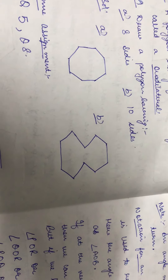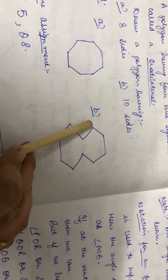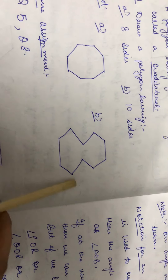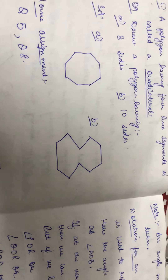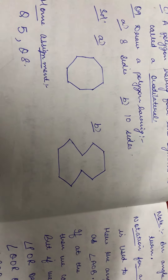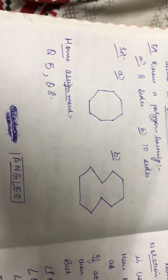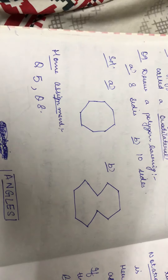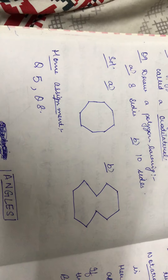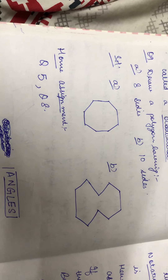Next, a polygon with ten sides — one, two, three, four, five, six, seven, eight, nine, ten. So this is a polygon with ten sides. Question number 5 and question number 8 of exercise 11.2 is your home assignment for today. Thank you. Have a nice day.